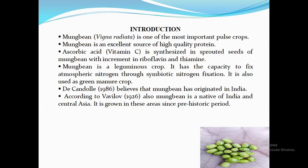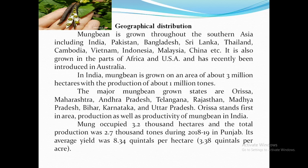Geographical Distribution: Mung bean is grown throughout Southern Asia including India, Pakistan, Bangladesh, Sri Lanka, Thailand, Cambodia, Vietnam, Indonesia, Malaysia, etc. It is also grown in parts of Africa and the USA, and has recently been introduced in Australia. In India, mung bean is grown on an area of about 3 million hectares with a production of about 1 million tons.